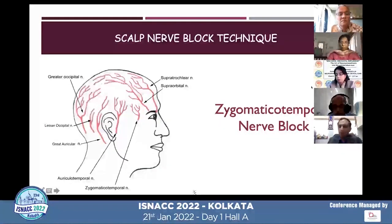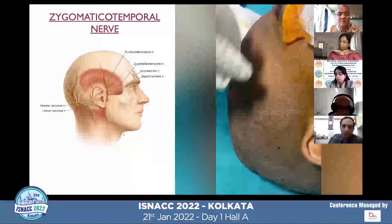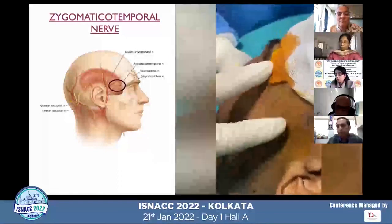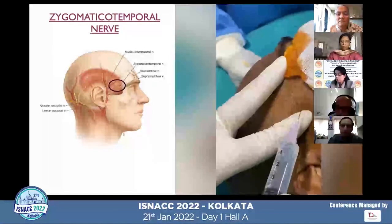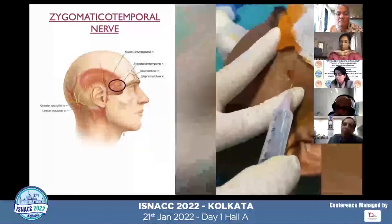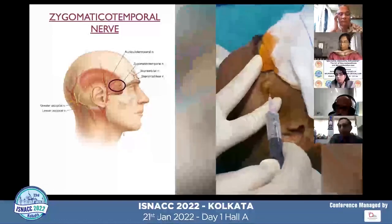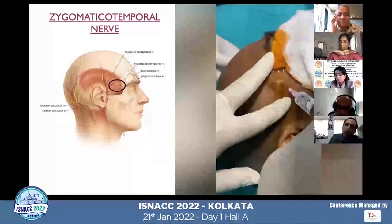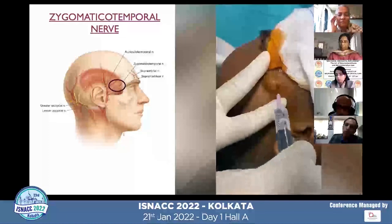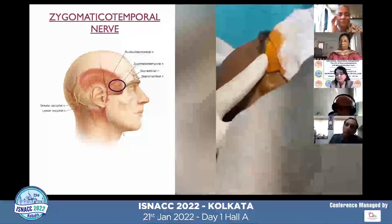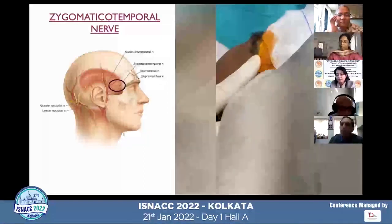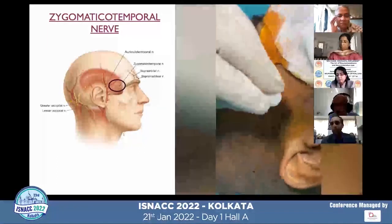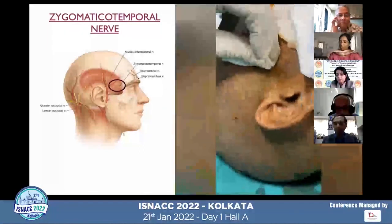The next nerve to block is the zygomaticotemporal nerve, a branch from the maxillary division of the trigeminal nerve. Locate the zygomatic arch and inject about one to two ml of drug approximately one centimeter above the zygomatic arch, pointing toward the lateral wall of the orbit. Inject in a fan-shaped manner and also go deeper to inject one ml below because this nerve has a superficial and deep branch — failing to block both branches may leave residual pain.